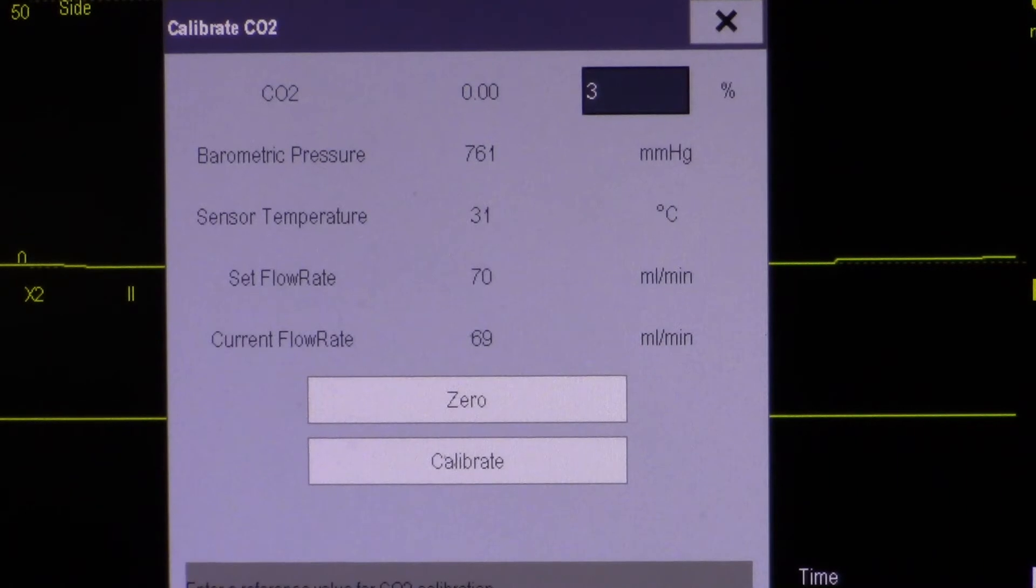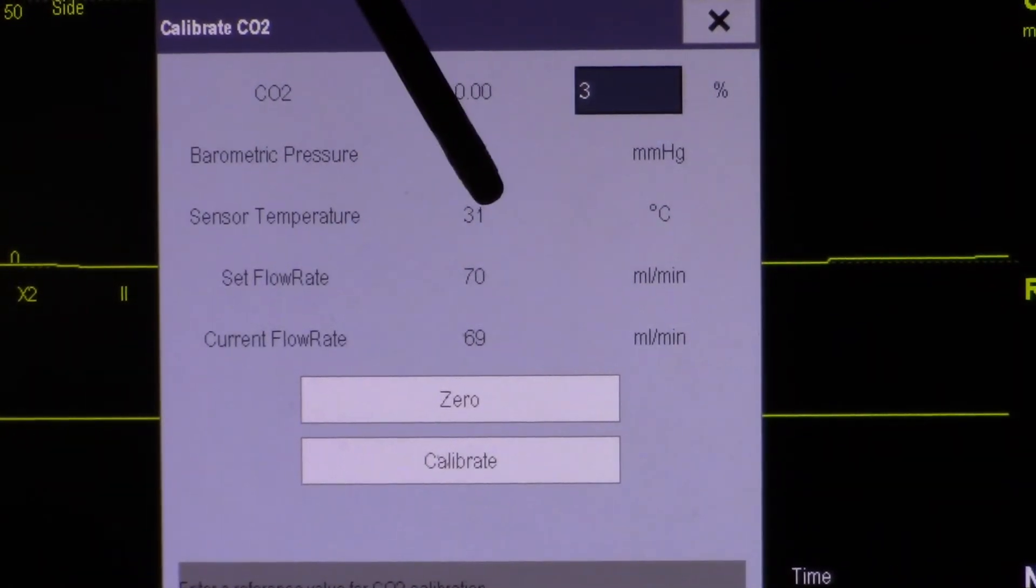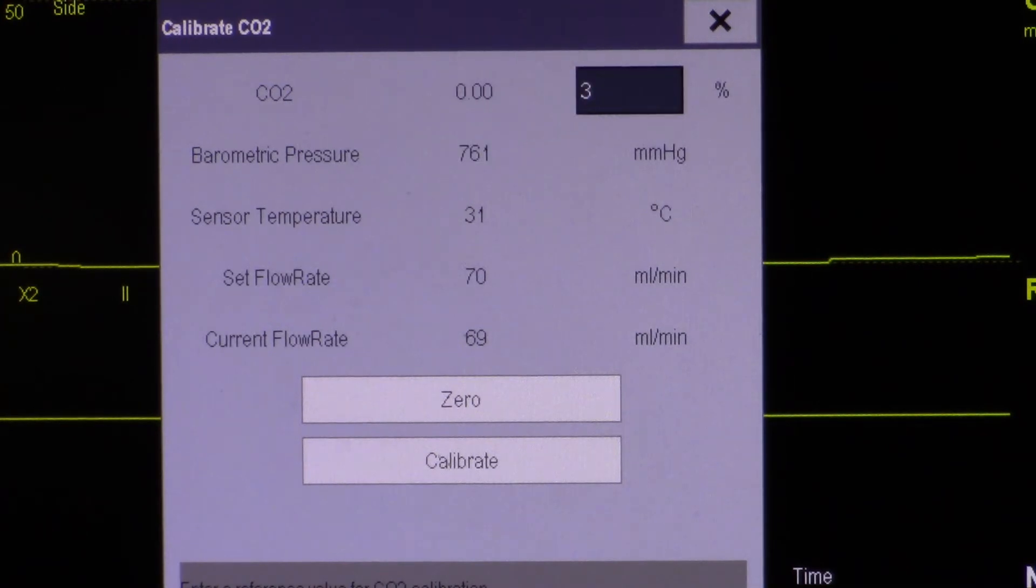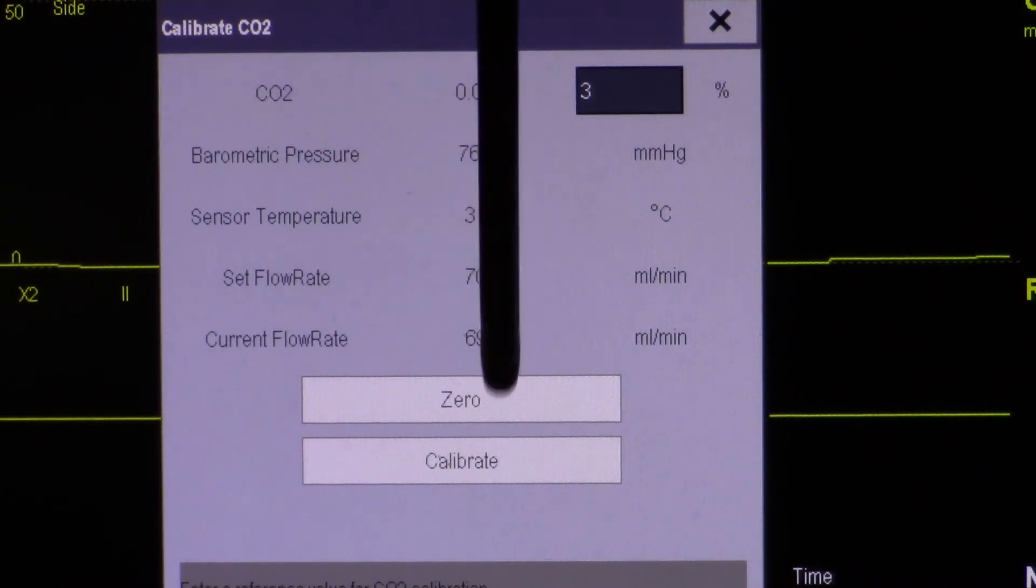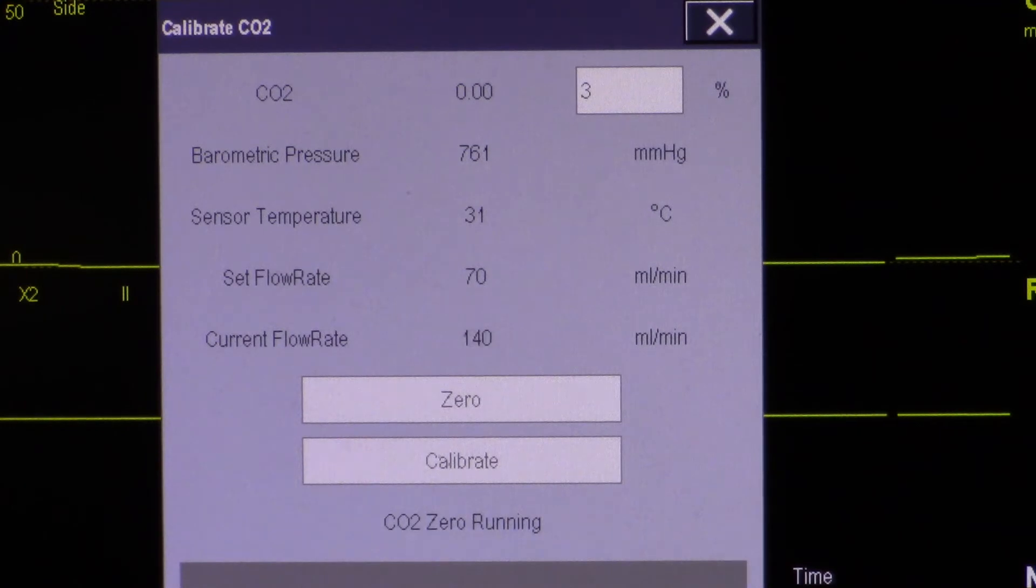Verify your sensor temperature is at or better than 30 degrees Celsius. Once verified, select zero. Allow the CO2 module to zero.